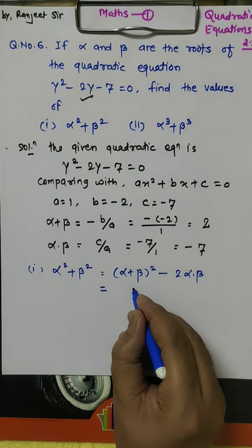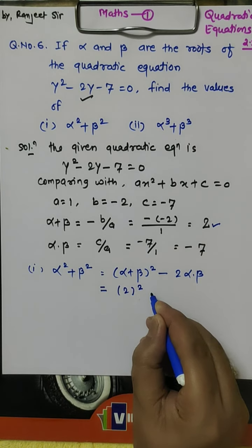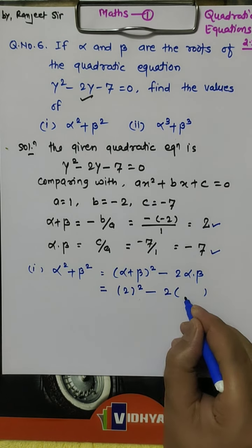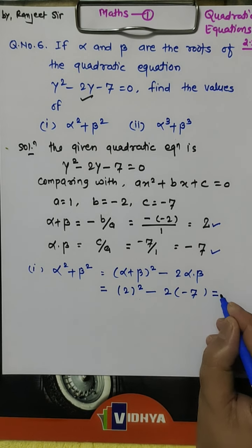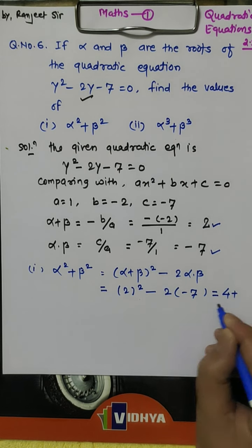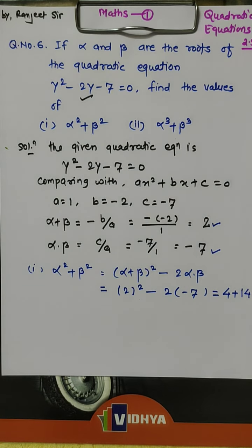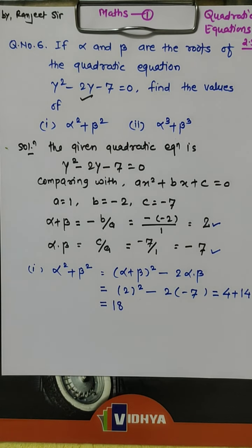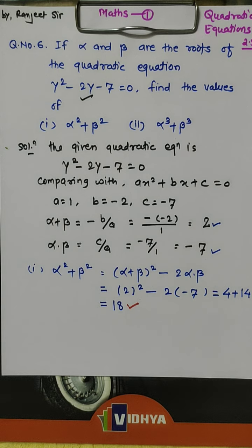Alpha plus beta is 2, so this becomes 2 the whole square, minus 2 times alpha into beta. Alpha into beta is minus 7, so minus times minus becomes plus: 2 squared is 4, and 2 times 7 is 14. So 4 plus 14 is 18. Alpha squared plus beta squared is equal to 18.